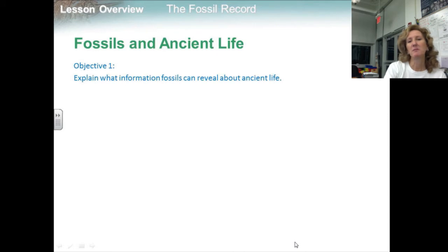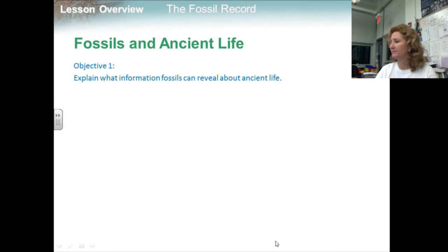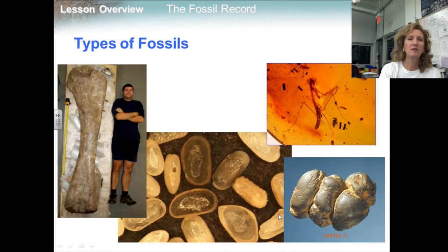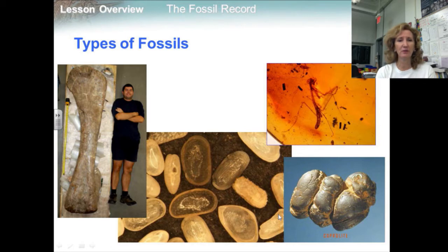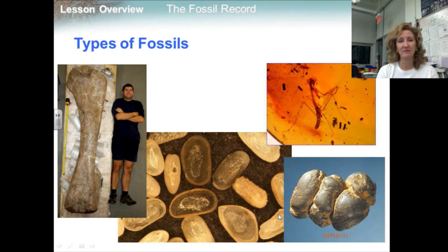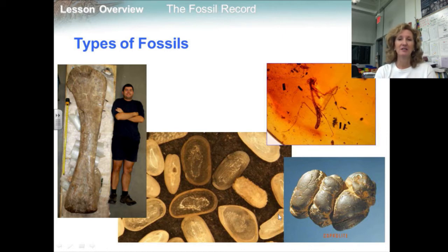Our first objective is to explain what information fossils can reveal about ancient life. Fossils are the most important source of information about extinct species — ones that have died out. Fossils vary enormously in size, shape, and degree of preservation. They form only under certain conditions, and for every organism preserved as a fossil, many have died without leaving a trace, so the fossil record is obviously not complete.